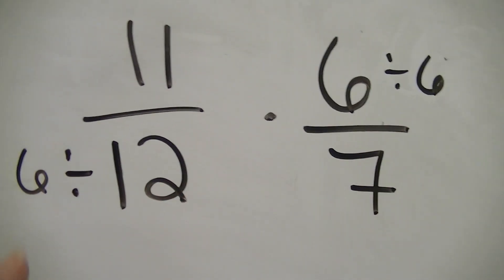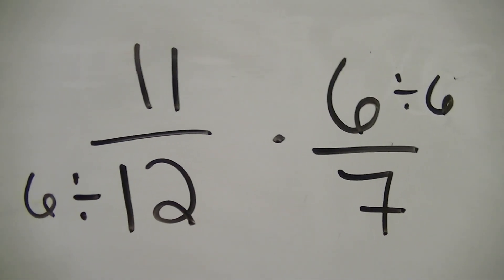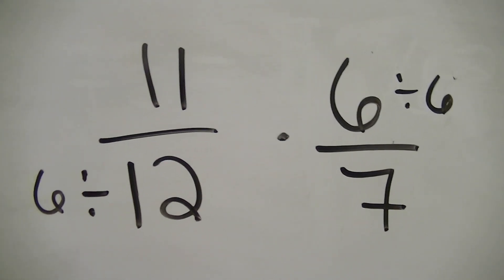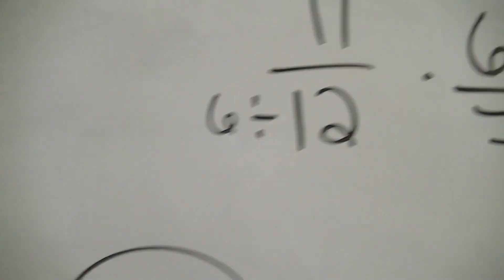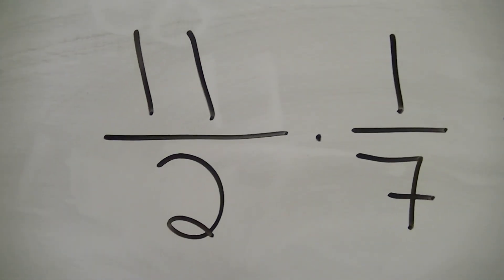So, I'm dividing them both by 6. In which case, 6 goes into 6 one time. 6 goes into 12 two times. So, over here, we have this rewritten like this.